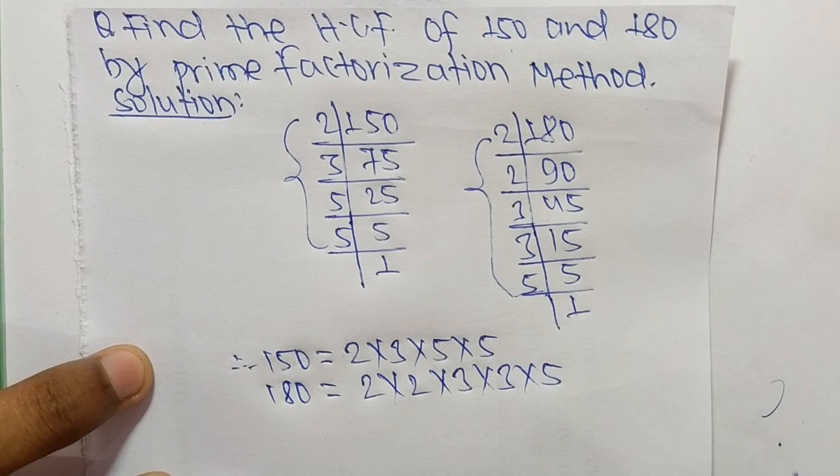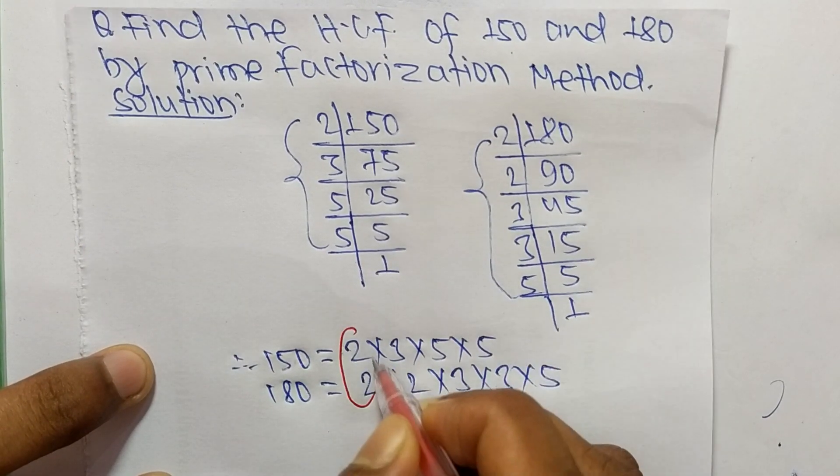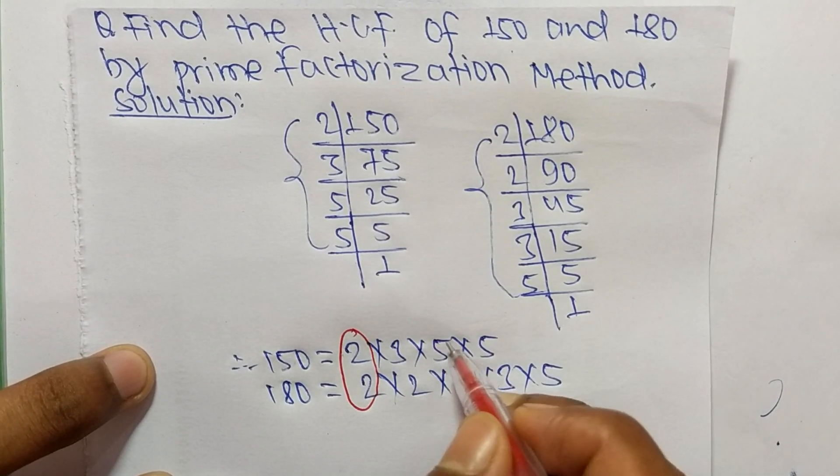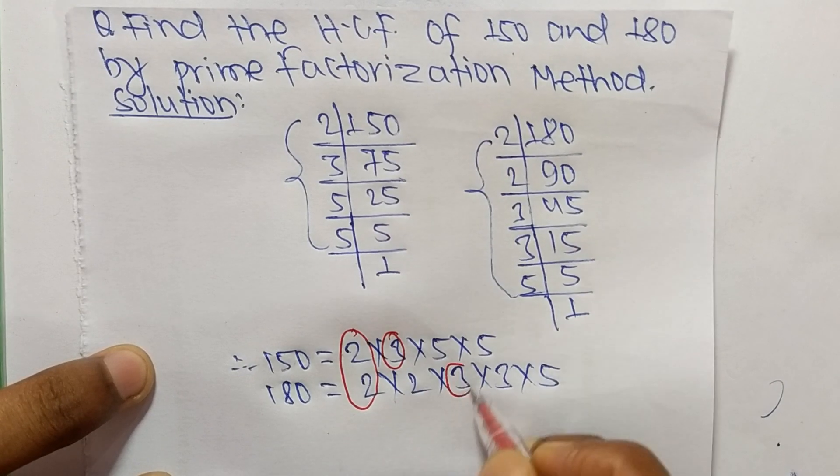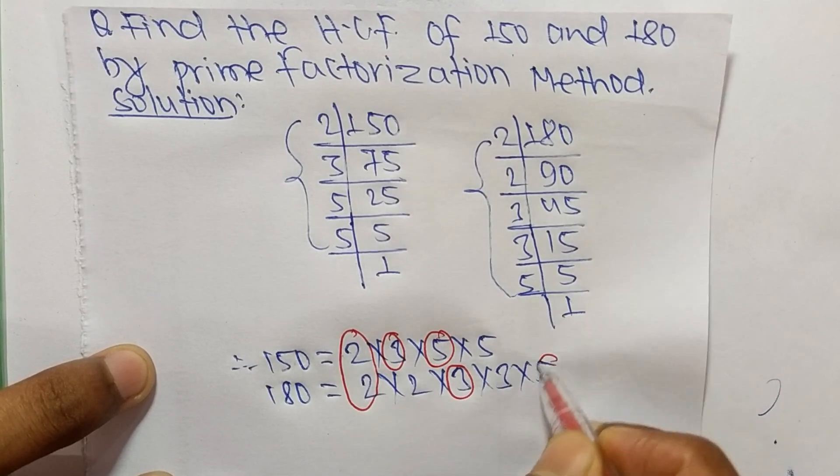Now we select the common factors in these prime factorizations. The common factors are 2, 3, and 5.